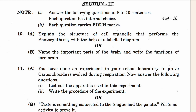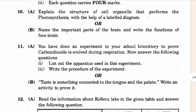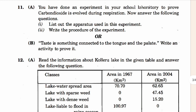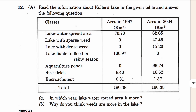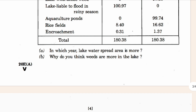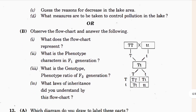In Section Three, explain the structure of the cell organism that performs photosynthesis with the help of a labeled diagram. The eleventh question: you have done an experiment in your class laboratory to prove that carbon dioxide is released during respiration — now answer the following questions. That's the twelfth one. Read the information about chlorine.